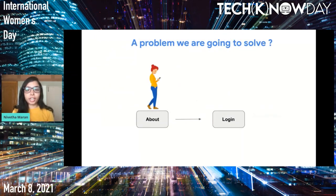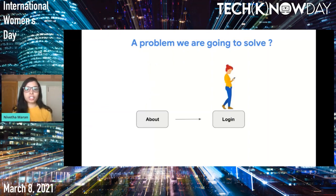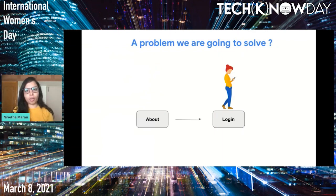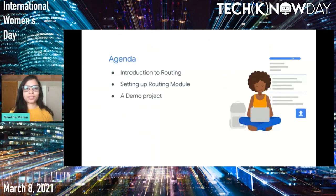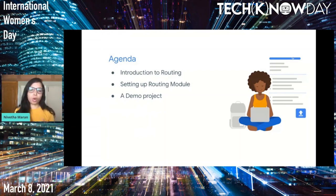In this video we are going to address the most common and important problem of moving users seamlessly from one page to another. Here we are going to make Alexa move from the about page to the login page seamlessly. The major step in achieving this is setting up a routing module, and we will create this seamless navigation with a demo project.